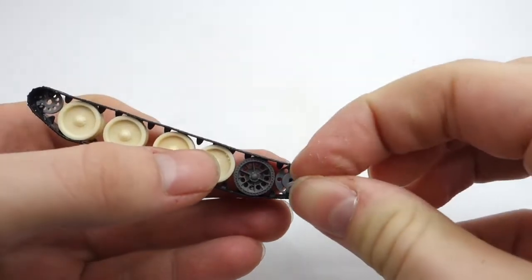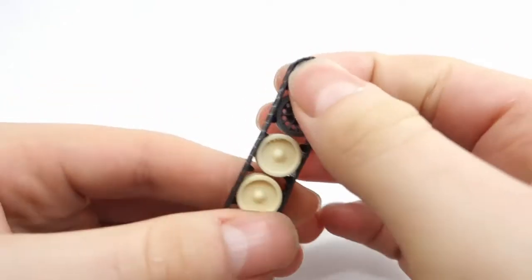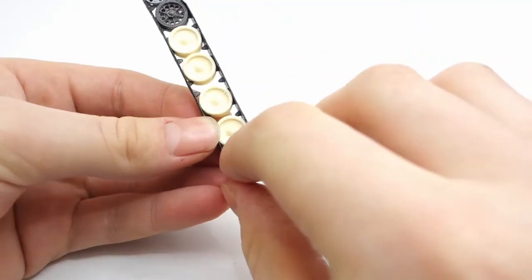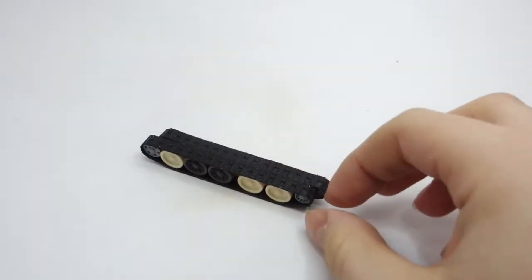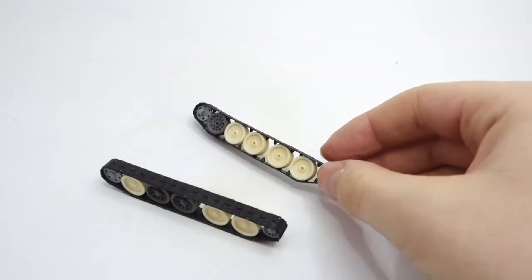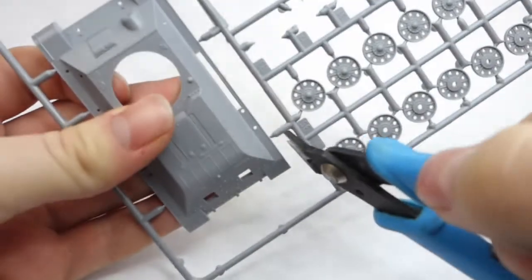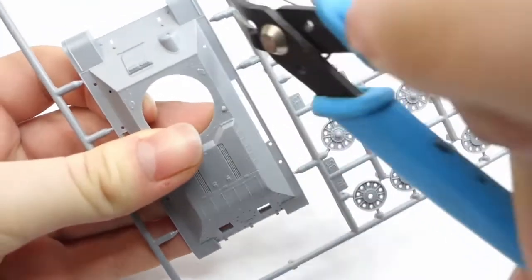Last parts left to be added to the running gear are those halves of the sprocket and idler wheel. The final result of this process are those two running gear sections which will make painting and weathering much easier. Now I can move on to the upper hull of the vehicle.